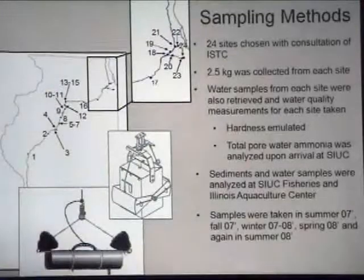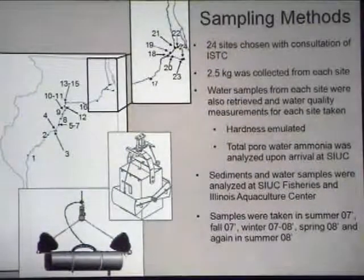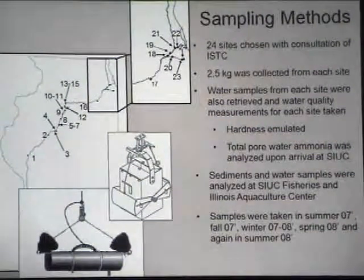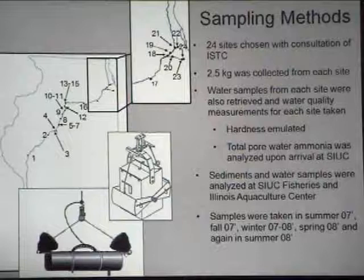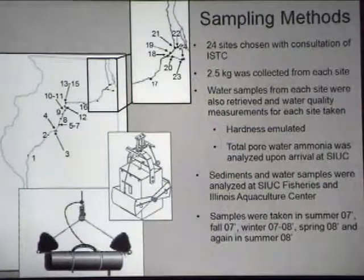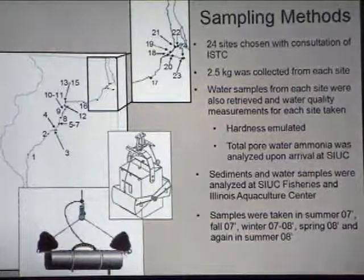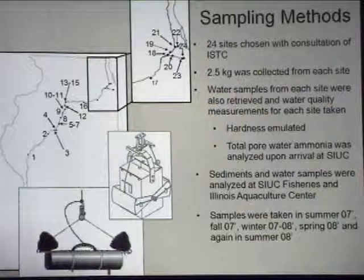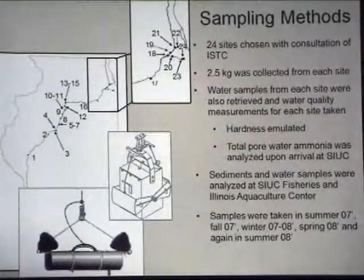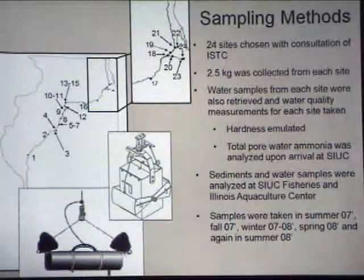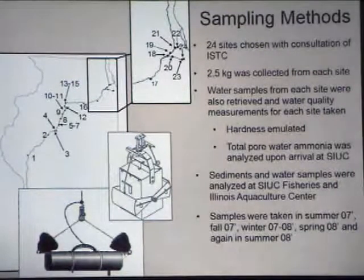For site sampling, we chose 24 sites in consultation with John Marlin at ISTC and sampled 2.5 kilograms wet weight of sediment using a Ponar and Ekman grab. Water samples from each site were retrieved, and water quality measurements were taken so we could emulate site hardness in the lab. The river is a very hard water river, so we emulated those same conditions. We also measured total pore water ammonia. Samples were taken in summer and fall of 2007, winter of 2007, and spring and summer of 2008.